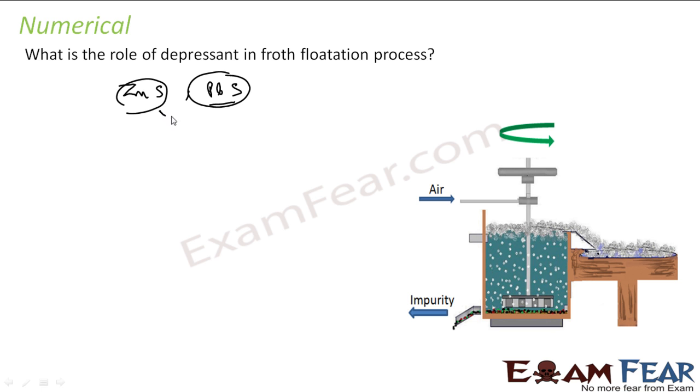Then I have to use depressant, and these depressants work by selectively preventing one ore to mix with the froth. Right, for example, for this case we use NaCNS as depressant.